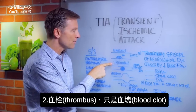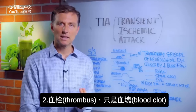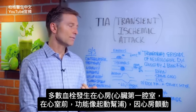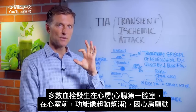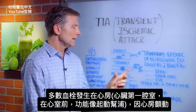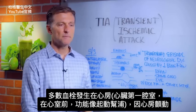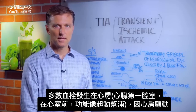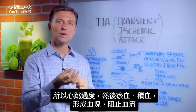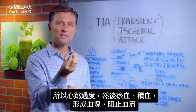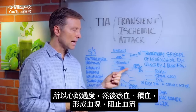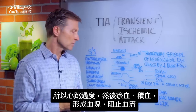Number two is a thrombus, which is just a blood clot. Most thrombuses occur in the atrium of the heart — the first chamber, like a primer pump before the ventricle. That comes from atrial fibrillation, where excessive erratic beating of the heart causes stagnant, pooling blood, leading to a clot that blocks blood flow.